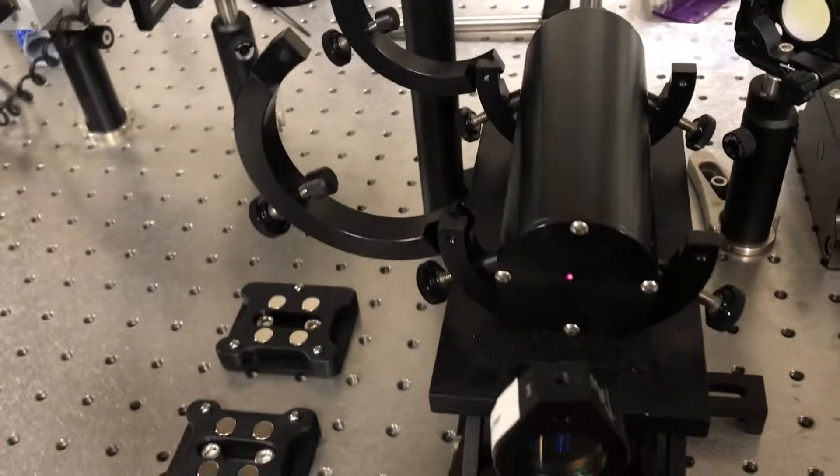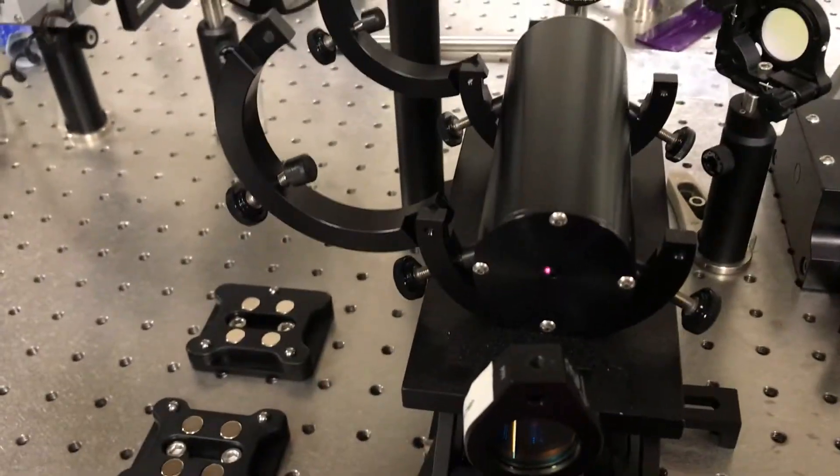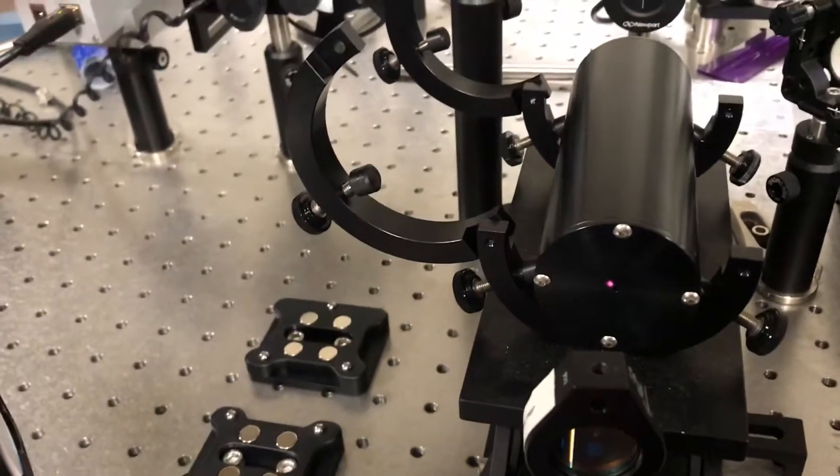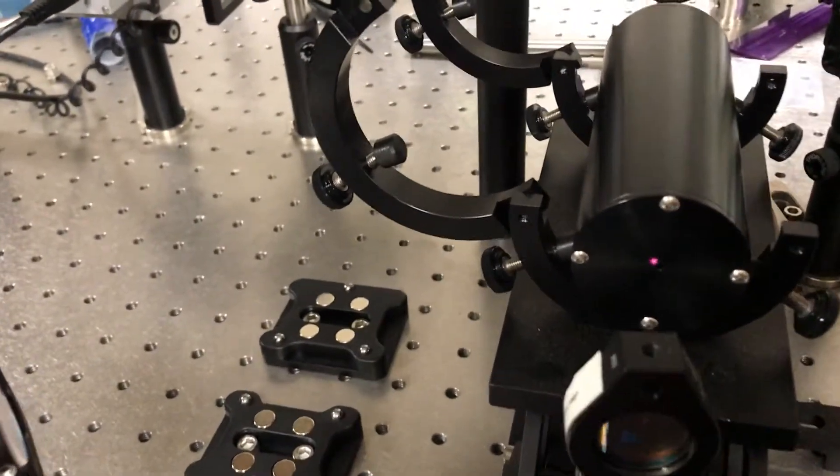So the best thing to do is to actually move the electro-optic modulator or the alignment tool for the electro-optic modulator until things go through the hole.